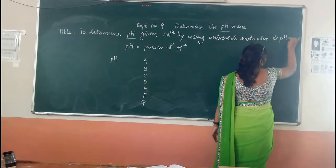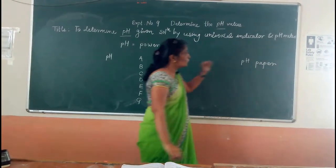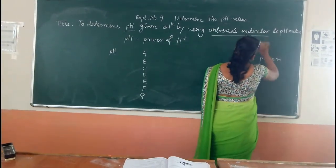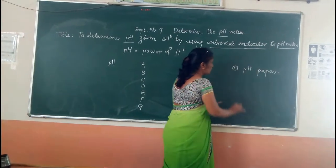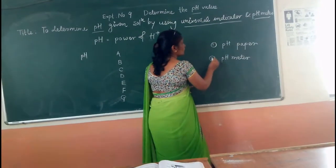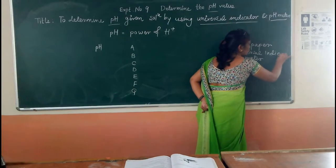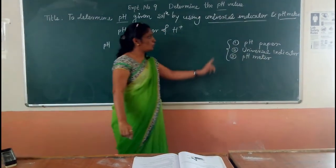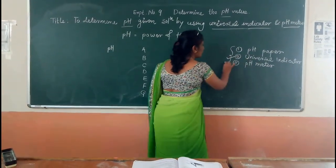In school, you determined pH using pH paper. Now, for diploma, you are going to determine pH using the universal indicator and pH meter. There are three methods to determine pH: one is by pH paper, second is by universal indicator, and third is by pH meter. For diploma, you will use the two methods: universal indicator and pH meter.